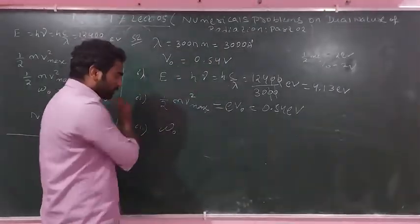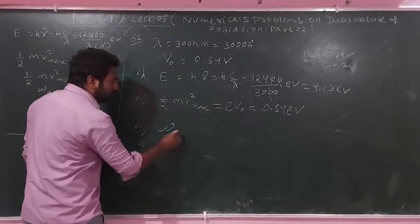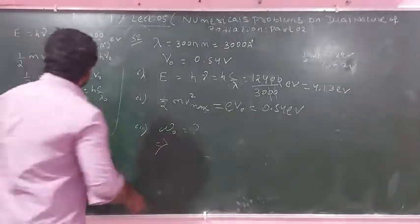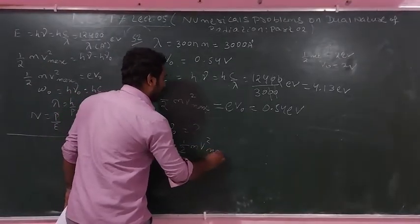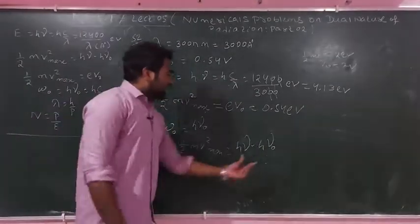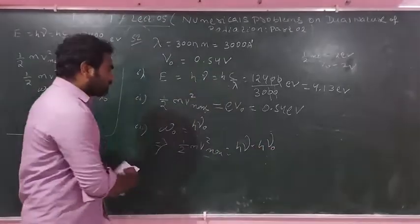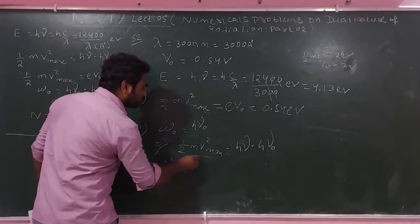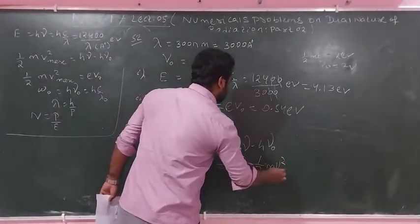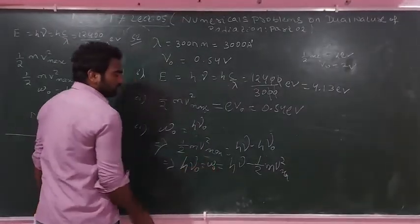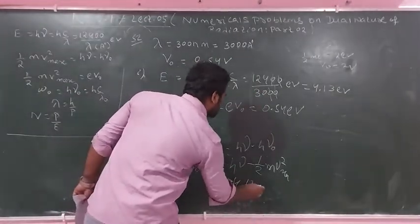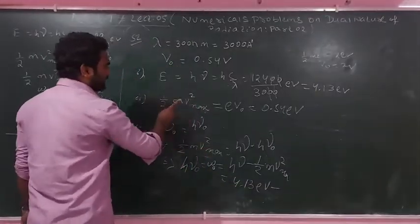Third, find the work function W₀ using Einstein's photoelectric equation: (½mv²)_max = hν − W₀, so W₀ = hν − (½mv²)_max. Substituting: W₀ = 4.13 eV − 0.54 eV.